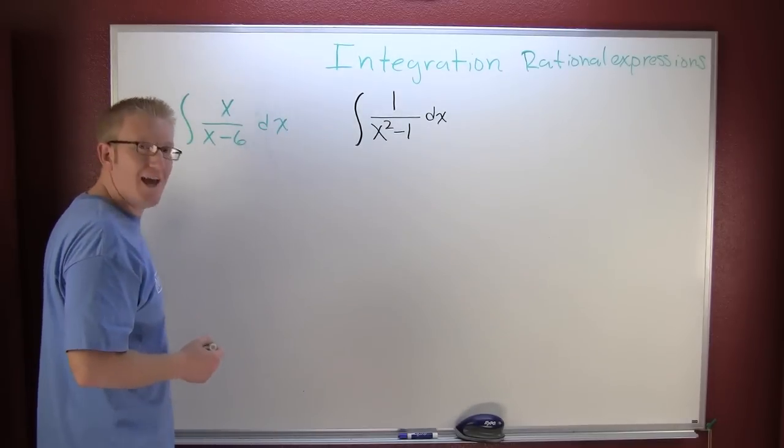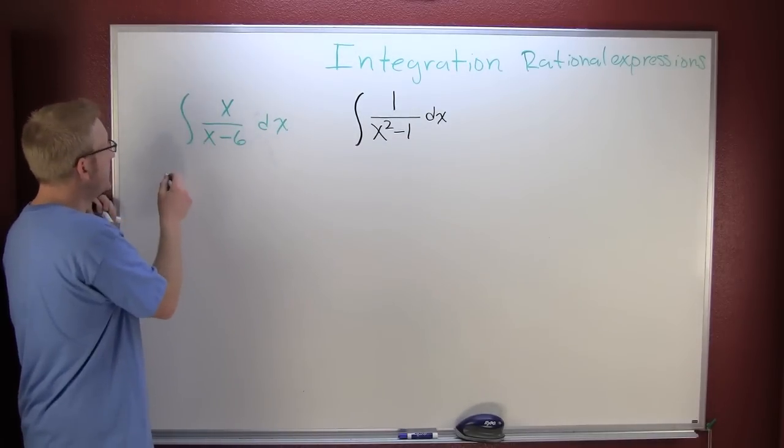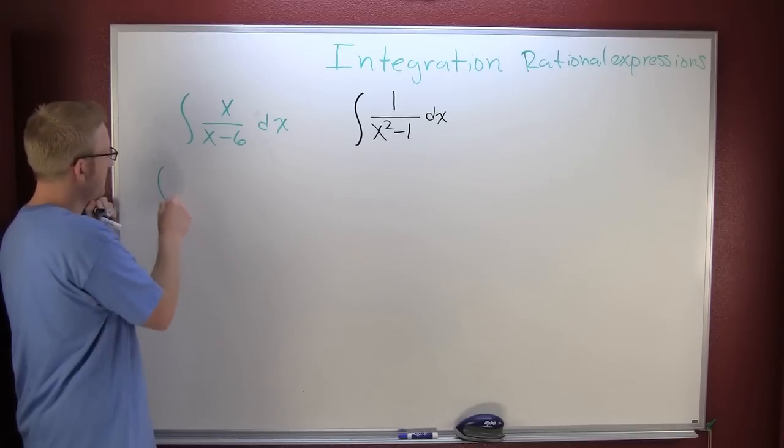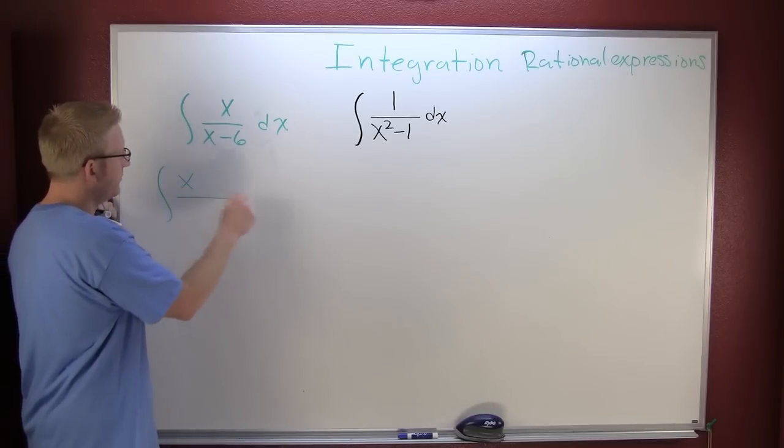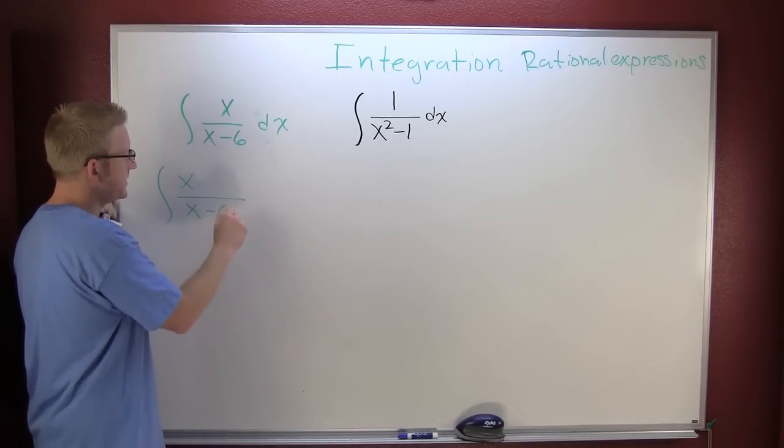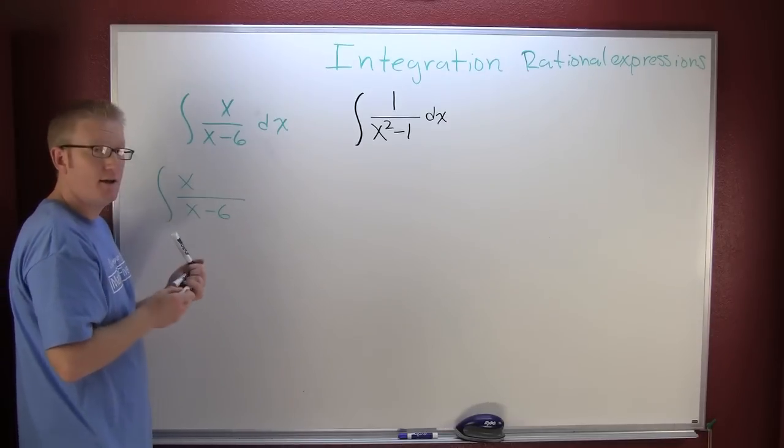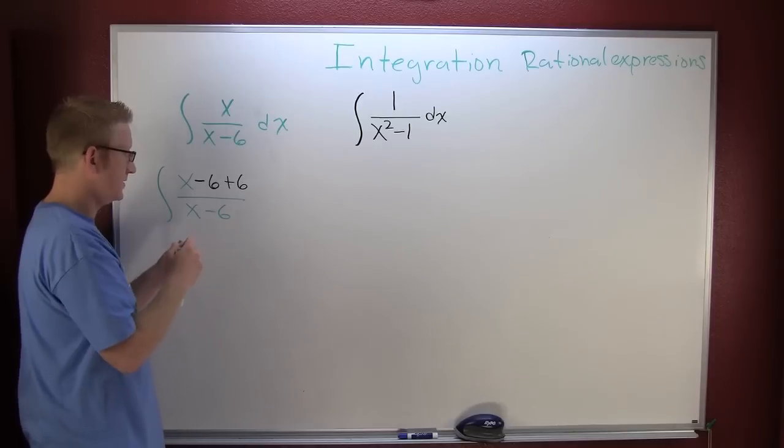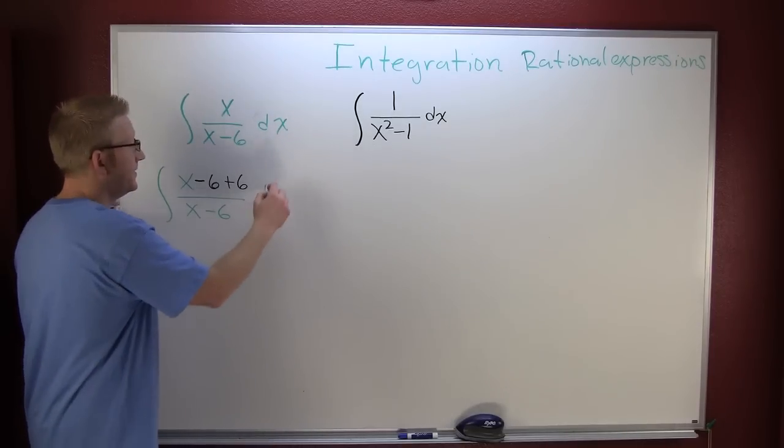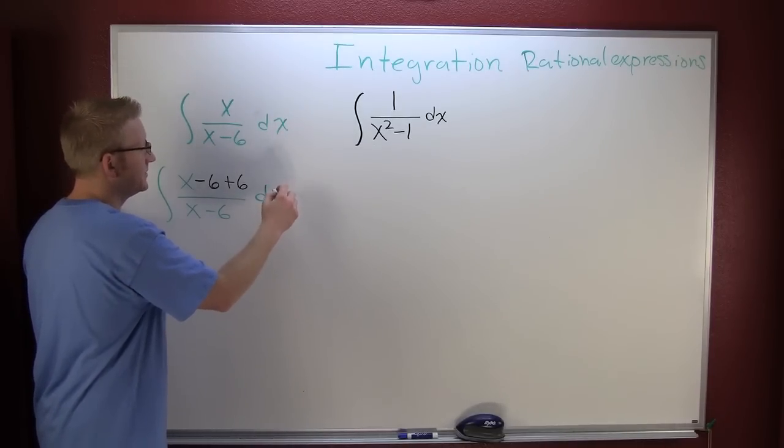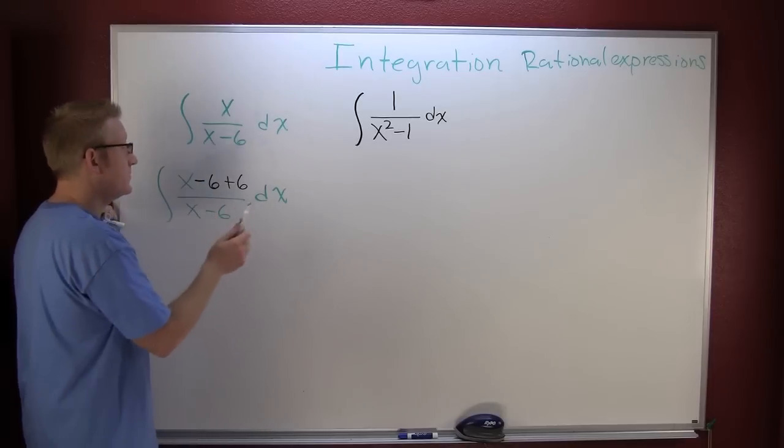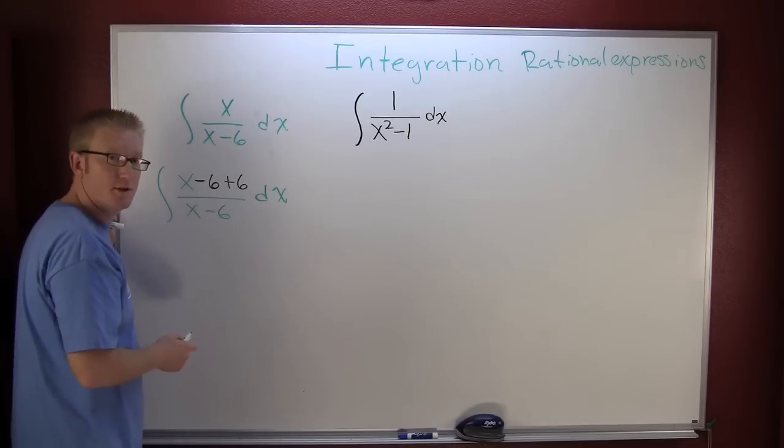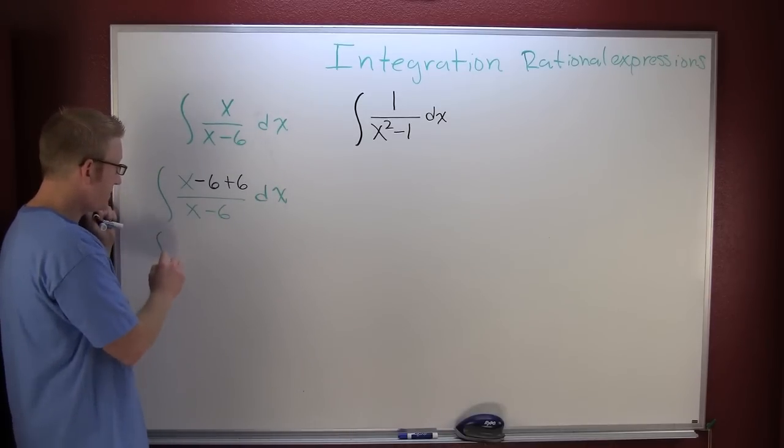Can I show you a slick trick? What if we take that guy and we add nothing to it? If I take that guy, x over x minus 6, and I subtract a 6 and add a 6. Can I do that? Yeah, I'm not changing the thing. I'm adding 0. So now I have a fraction in the numerator. I have multiple terms in the numerator and I can split those two.